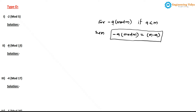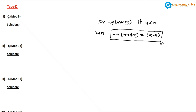Make sure that a must be less than m for this rule to apply. In problem 1, a equals 2 and m equals 5; since 2 is less than 5 the rule is applicable. So (-2) mod 5 = 5 - 2 = 3.